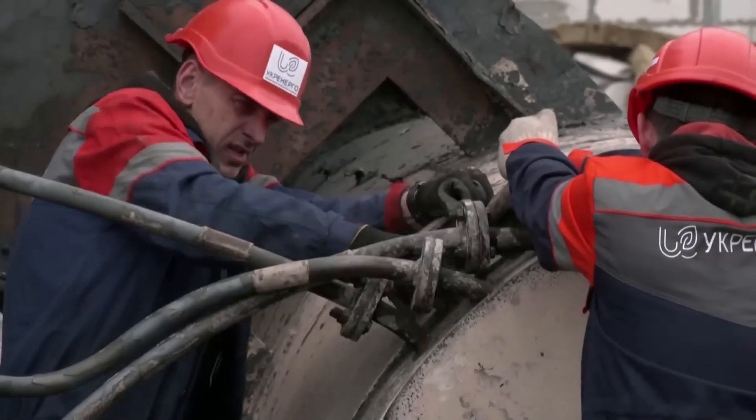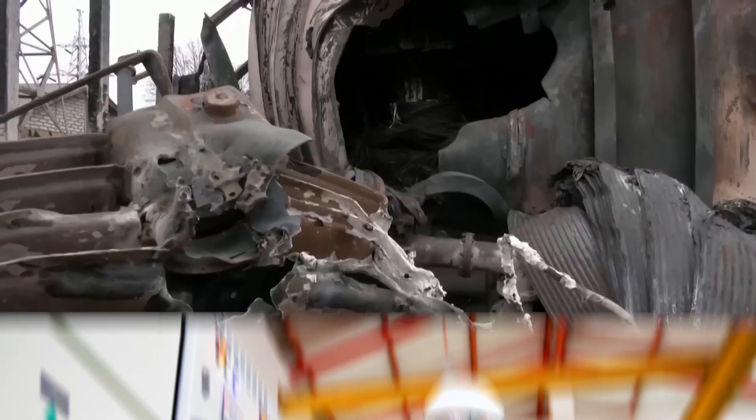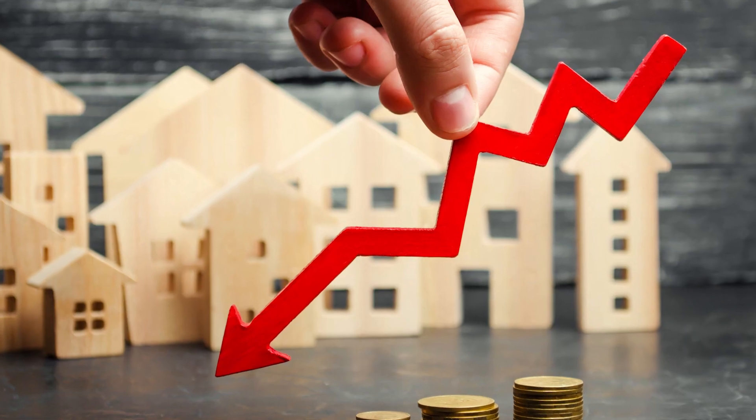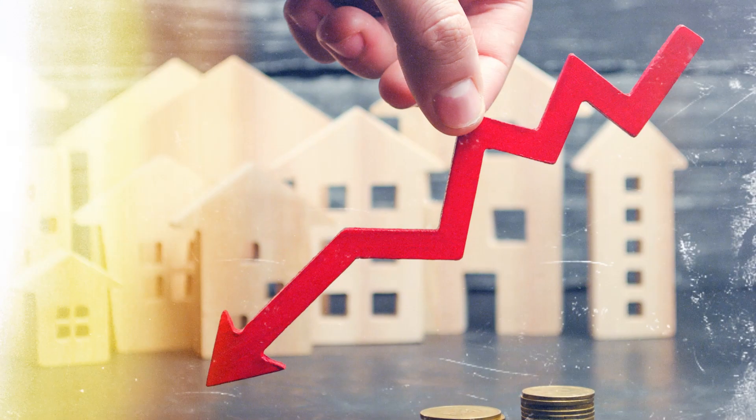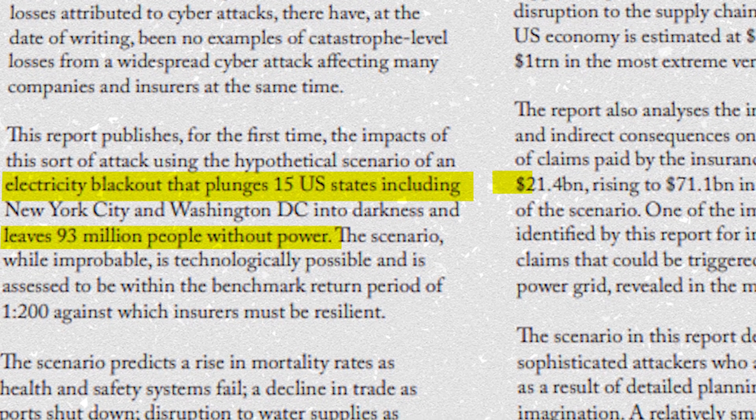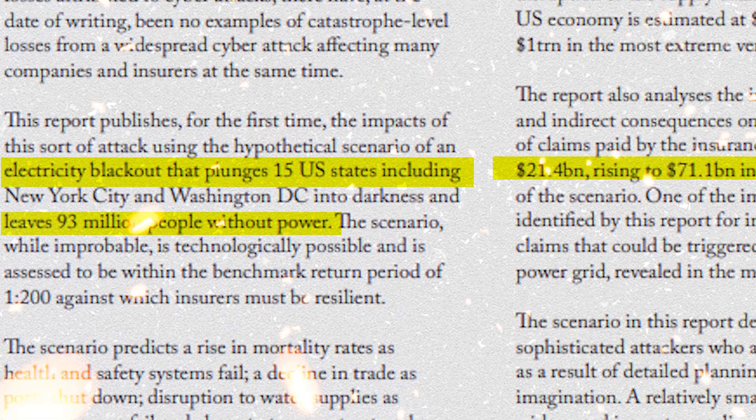In addition to the losses due to power grid structural damage, loss of operations, and loss of energy sales, the insurance industry would also be held to pay out substantial sums. The same report estimated that insurance companies would be paying claims that amounted to $21.4 billion to $71.1 billion.